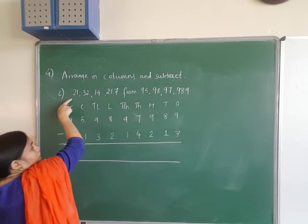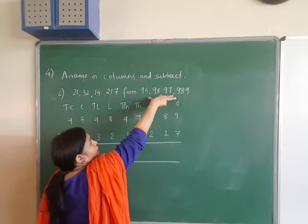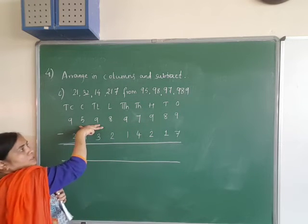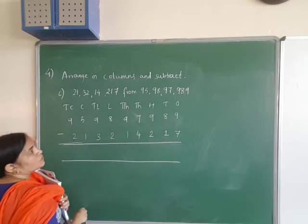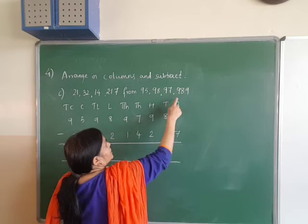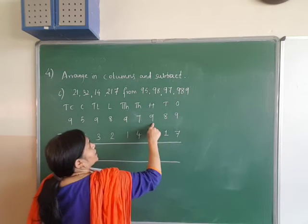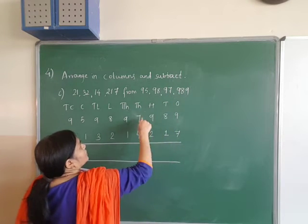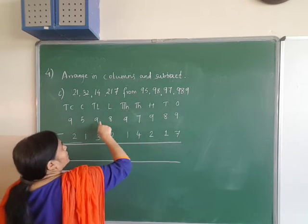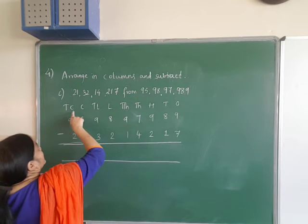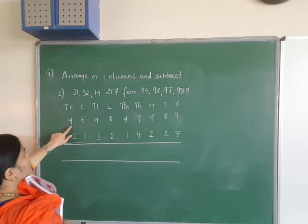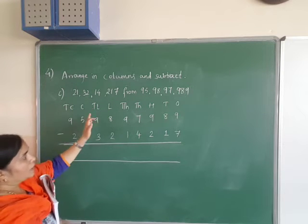From this number you have to subtract the second number. The second number comes below the first. Place the first number: ones is 9, tens is 8, hundreds is 9, thousands is 7, ten-thousands is 9, lakh is 8, ten-lakh is 9, crore is 5, ten-crore is 9. Place according to the place value column-wise.